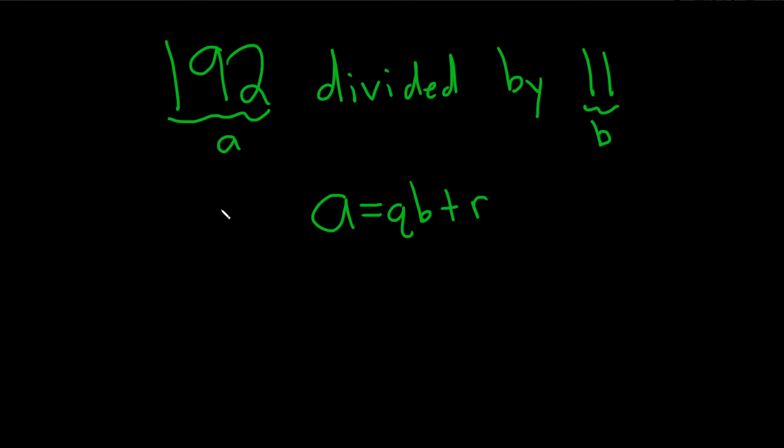Now we'll just perform the division. So 192 divided by 11. I'm going to put this in my calculator and see what I get. I got 17 point, and it looks like it's 4 or 5 repeating like this.